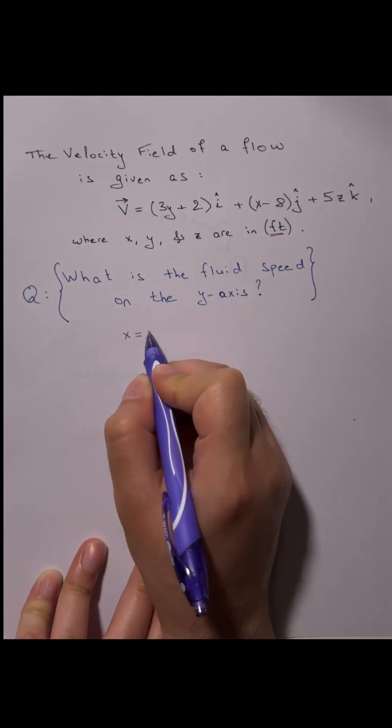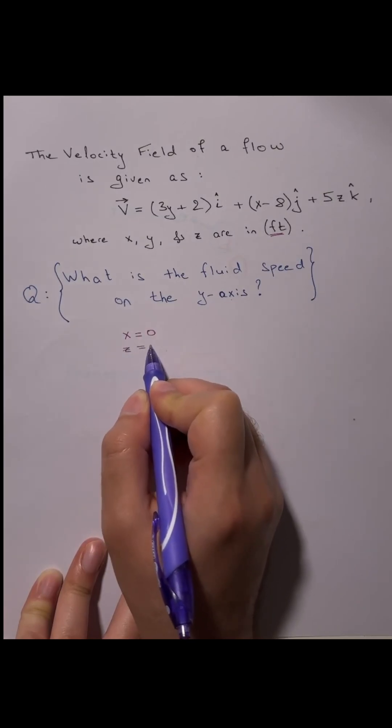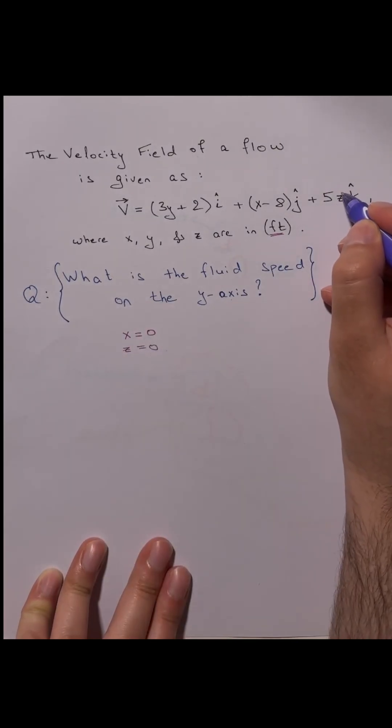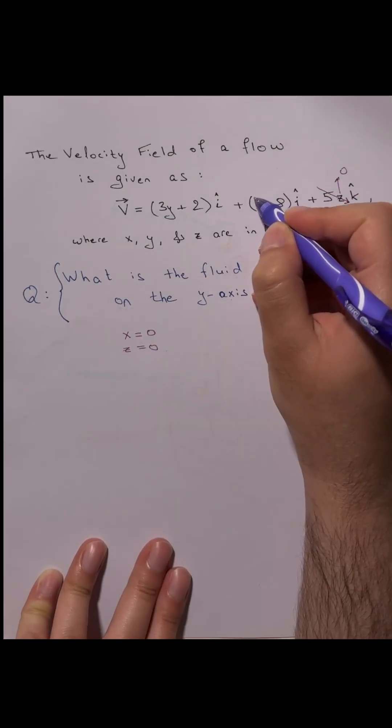So on the y-axis, x is equal to zero and z is equal to zero. So we can cross out z because it's zero and the same goes for x.